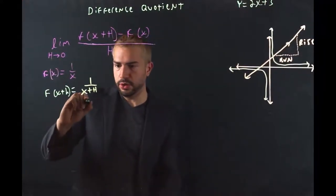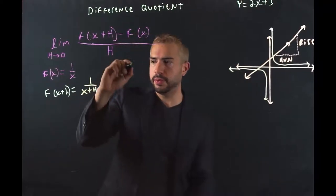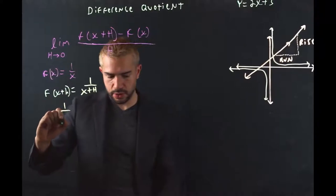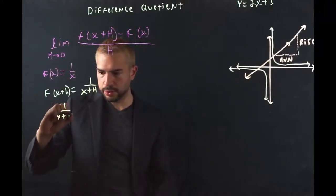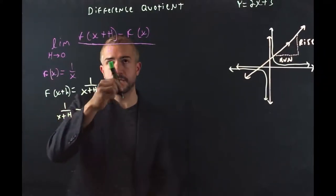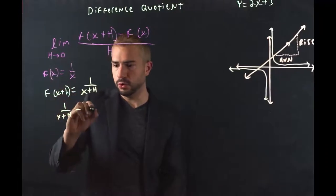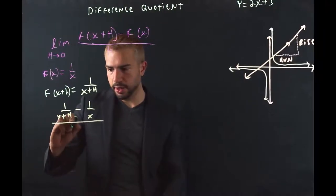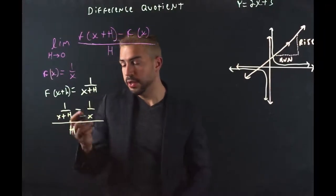We'll do it right under here. 1 over (x + h) minus f(x), which we know as 1 over x. All of this divided by h.